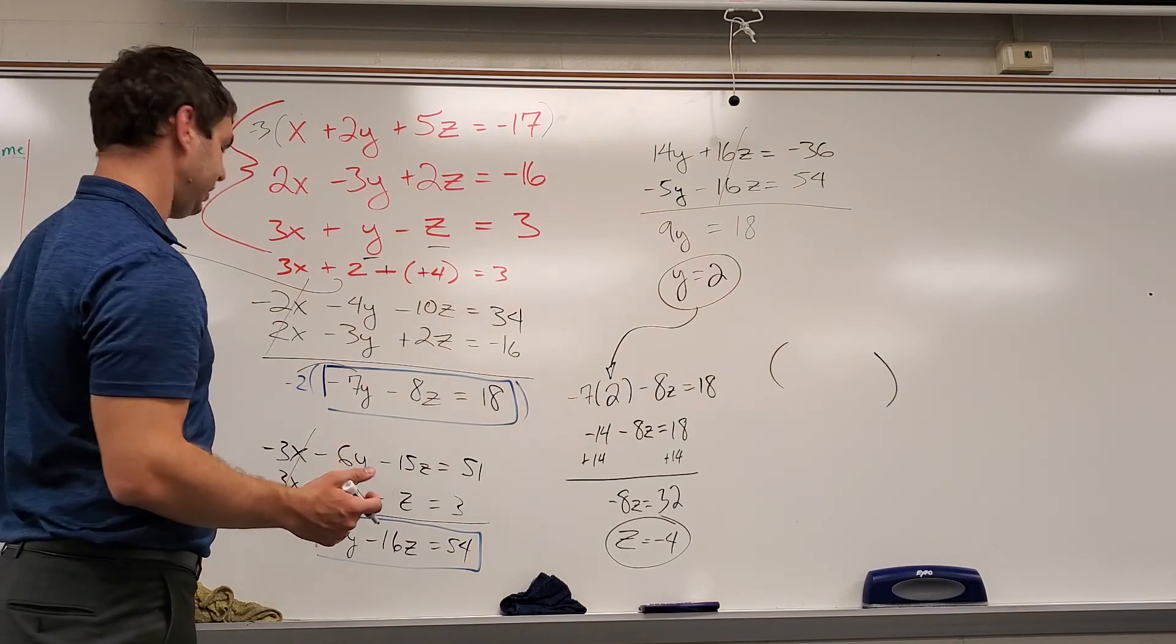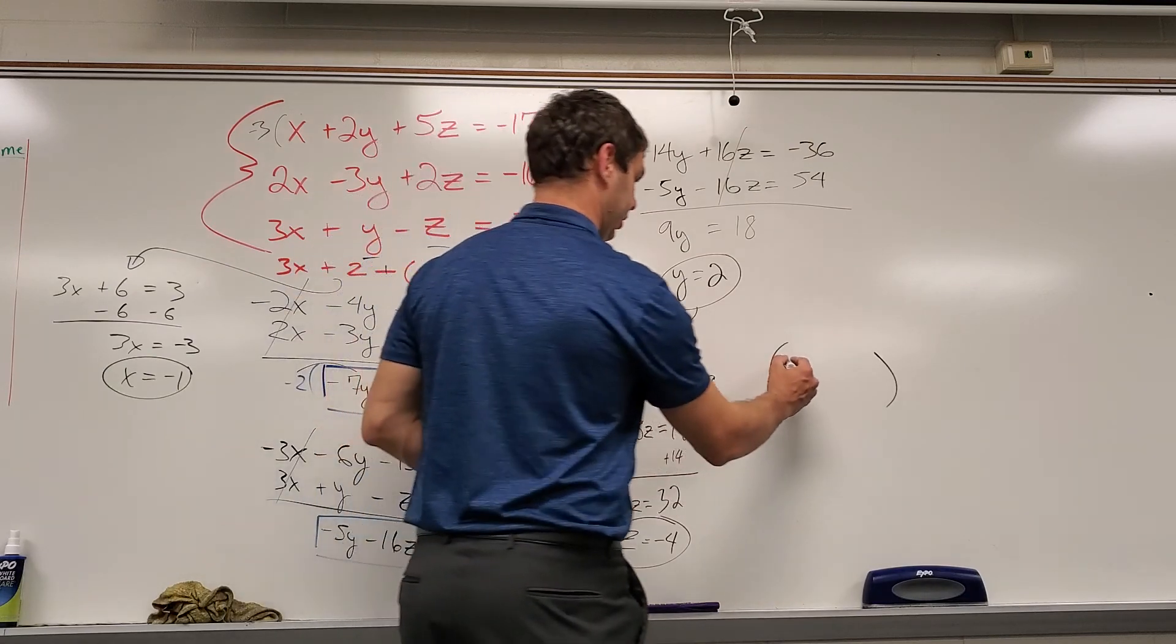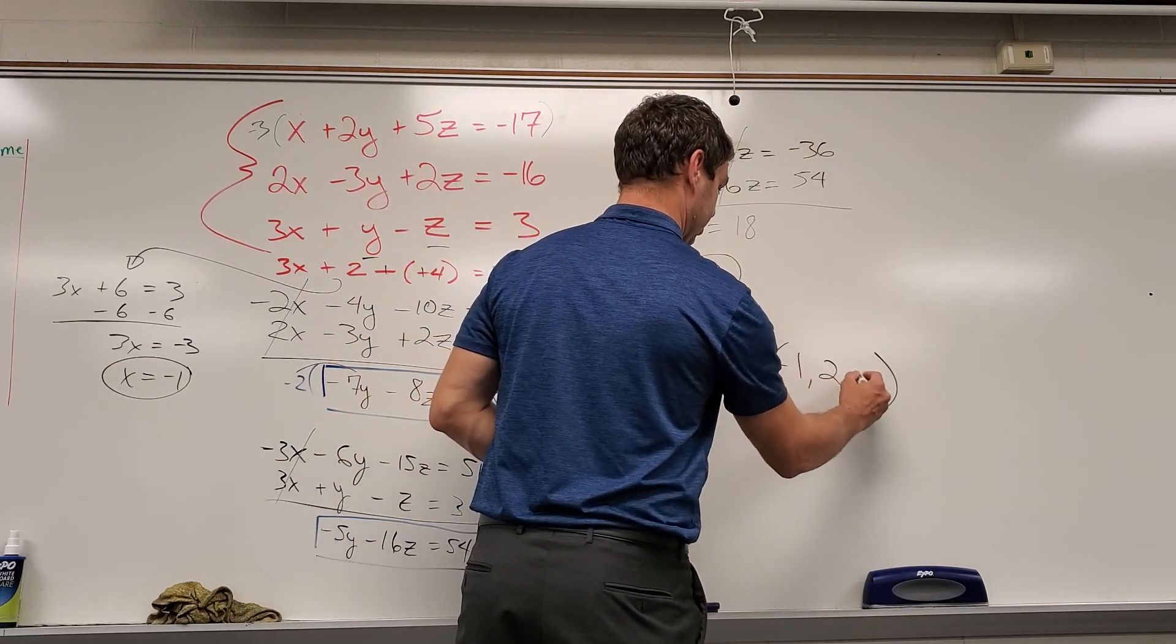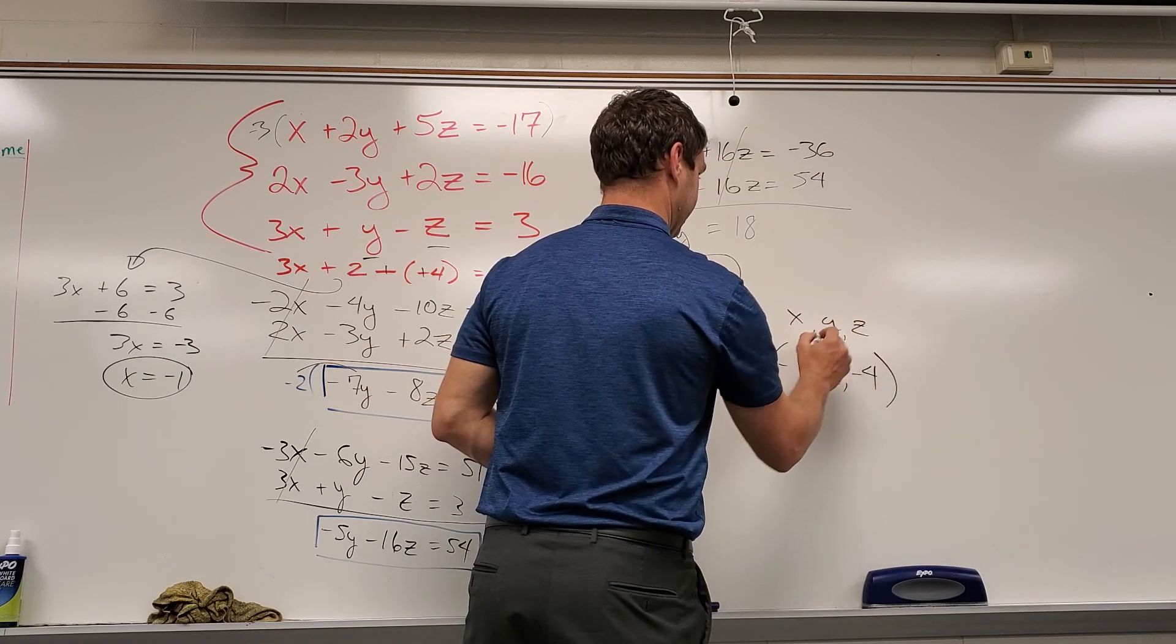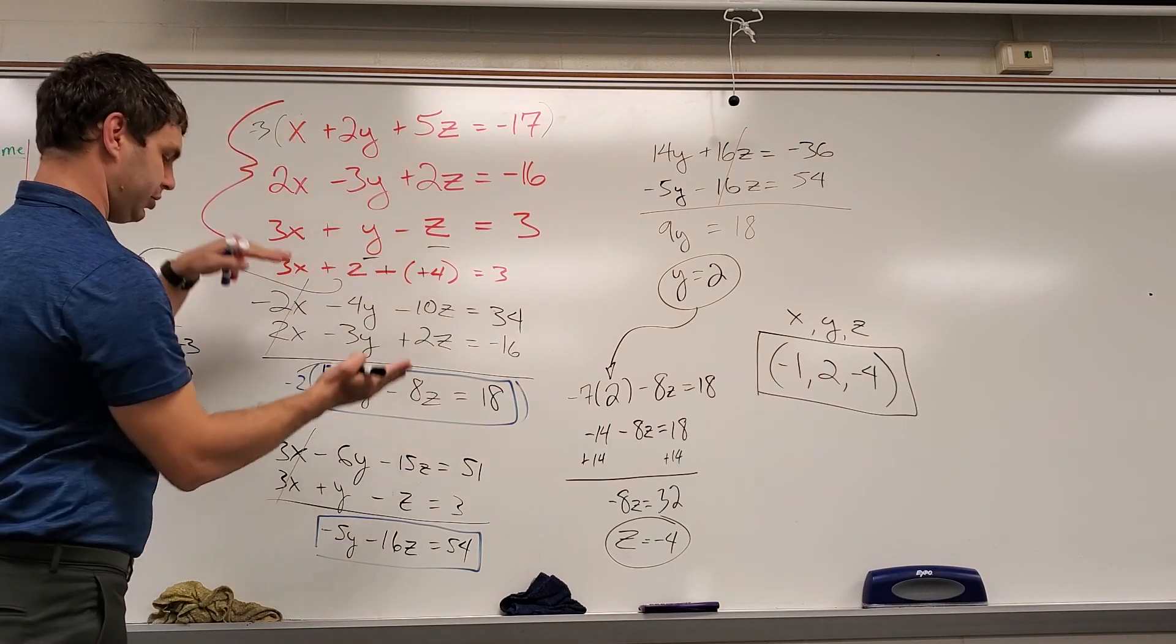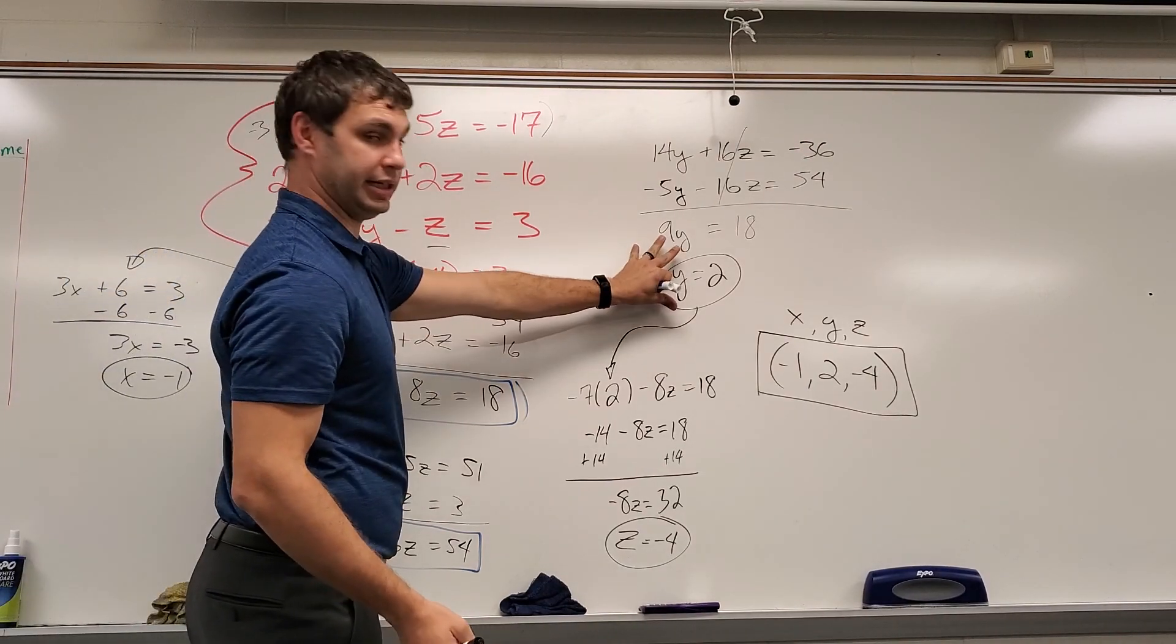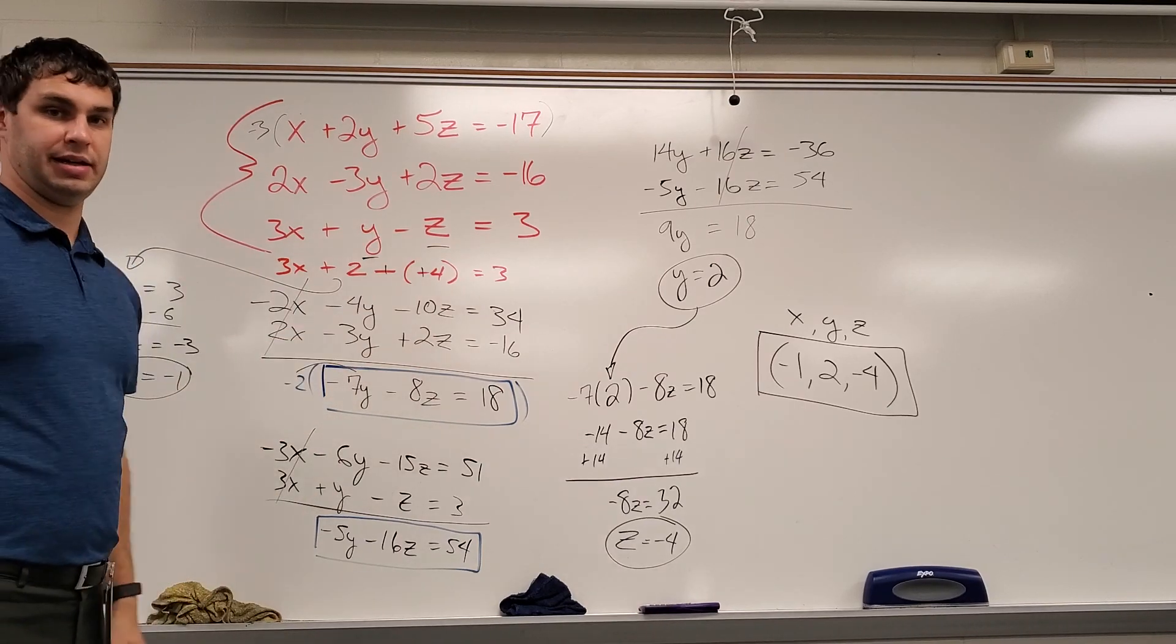So x, y, and z. We're going to have negative 1, 2, and negative 4. Remember, that's x, y, and z. So these take a little bit of time, but if you work your way through them, you go from three variables to two variables, down to one, and then work your way back in and find x, y, and z.